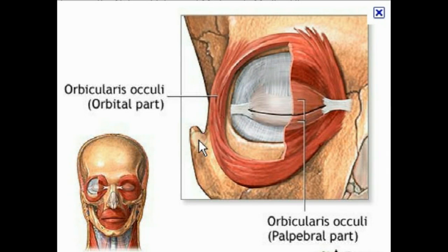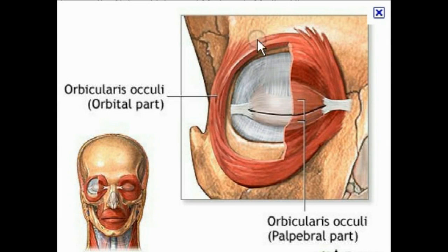Here we're looking at orbicularis oculi. The origin is the medial wall of the orbit, and it encircles the orbit, inserting upon itself. Its main action is closing the eye.